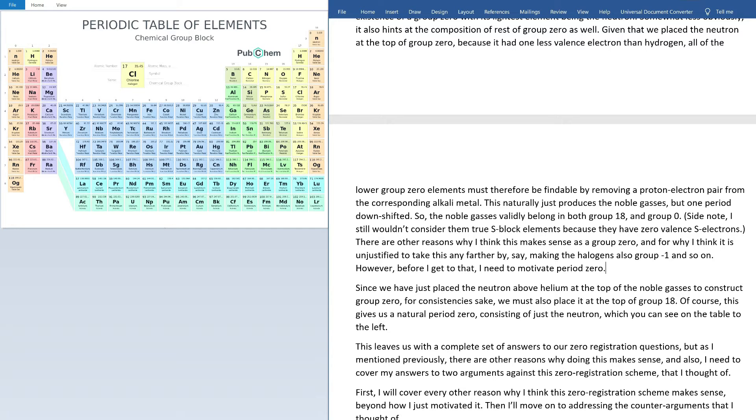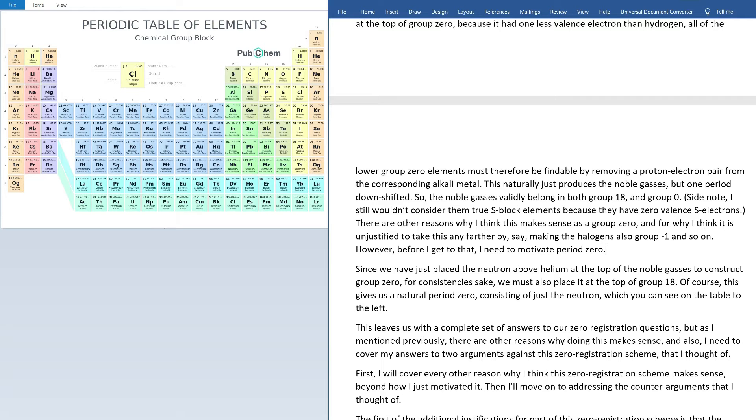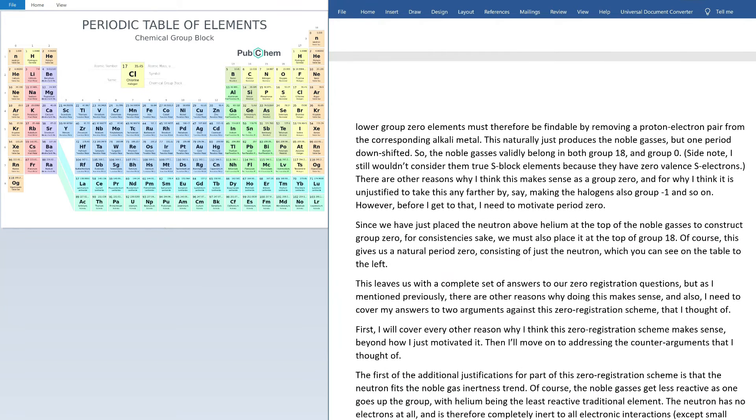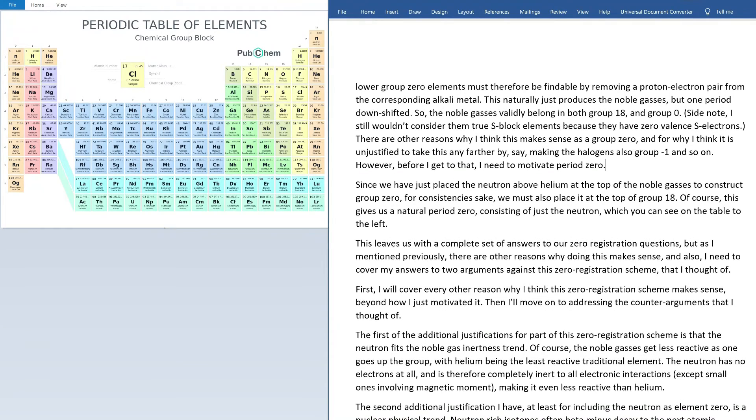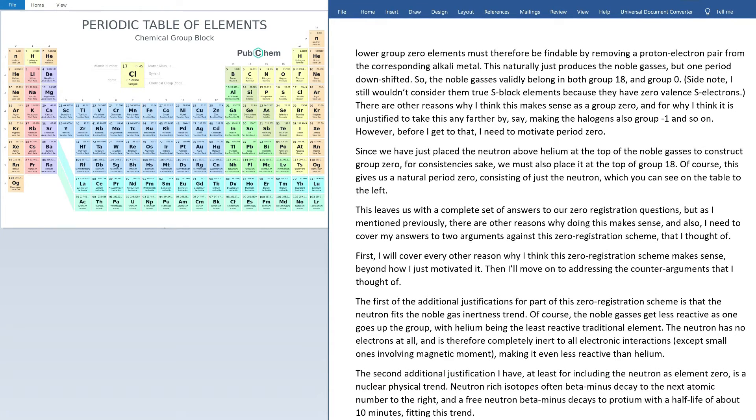Given that we placed the neutron at the top of group zero because it had one less valence electron than hydrogen, all of the lower group zero elements must therefore be findable by removing a proton-electron pair from the corresponding alkali metal. This naturally just produces the noble gases, but one period downshifted. So the noble gases validly belong to both group 18 and group zero. Side note, I still wouldn't consider them true S-block elements because they have zero valence S-electrons. Now there are other reasons why I think this makes sense as a group zero, and for why I think it is unjustified to take this any farther by, say, making the halogens also group negative one and so on. However, before I get to that, I need to motivate period zero.